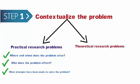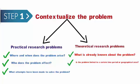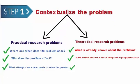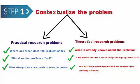Theoretical research problems. For theoretical research, think about the scientific, social, geographical, and or historical background. What is already known about the problem? Is the problem limited to a certain time period or geographical area? How has the problem been defined and debated in the scholarly literature?